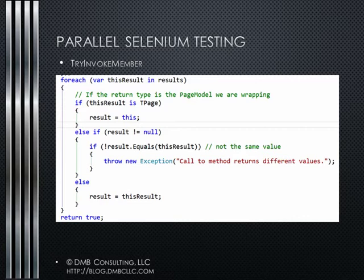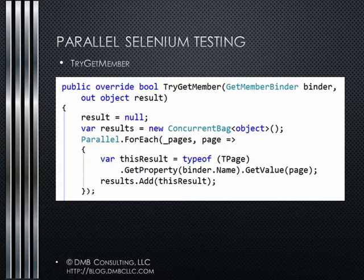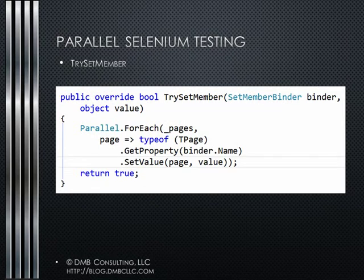Since the implementation of TryGetMember looks very much like TryInvokeMember, we tackle that next. In fact, the only difference between the two methods is the code inside the Parallel.ForEach parameter block. And TrySetMember is the easiest implementation of all, since there are no results to worry about.